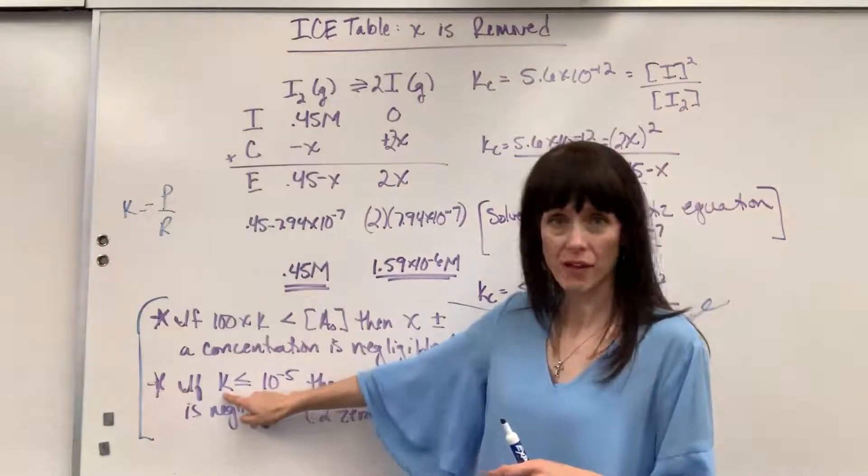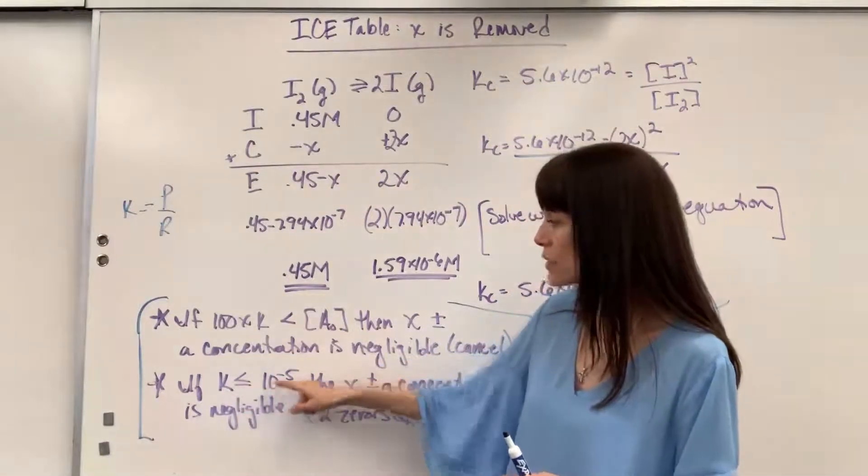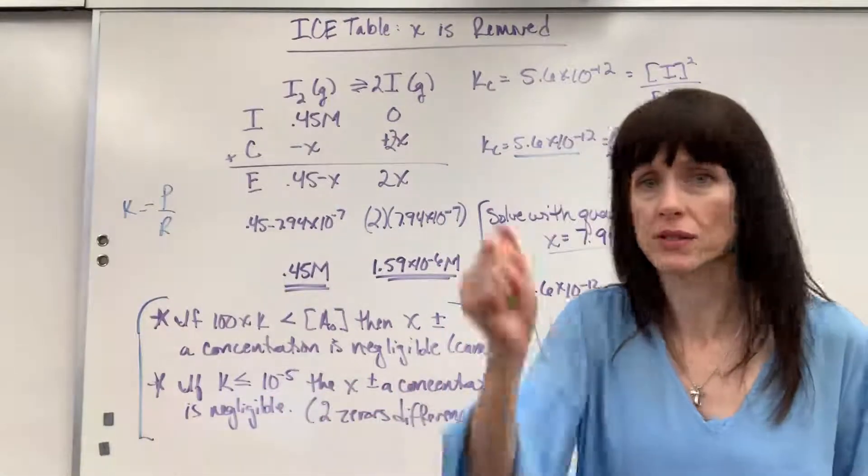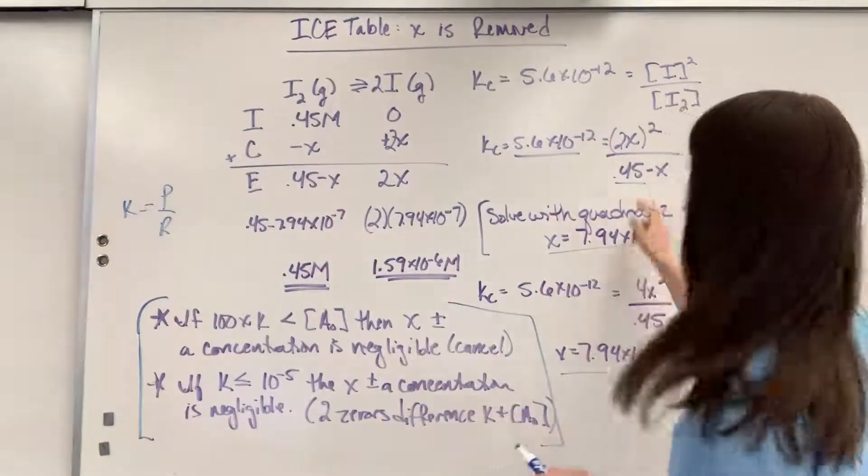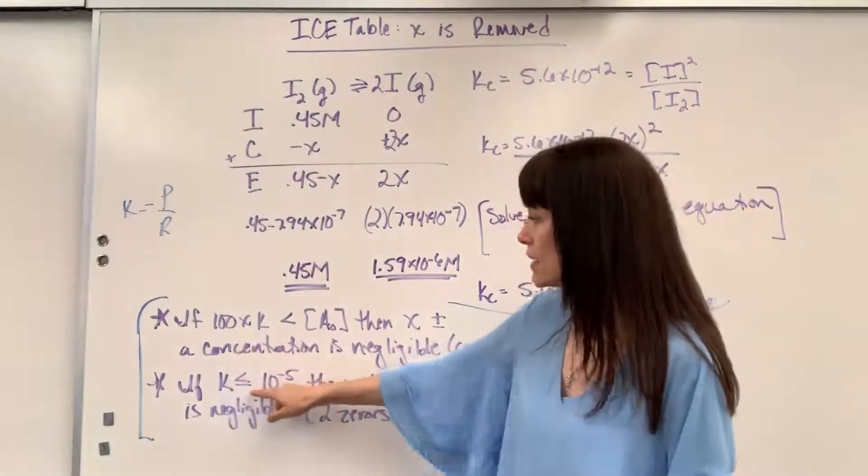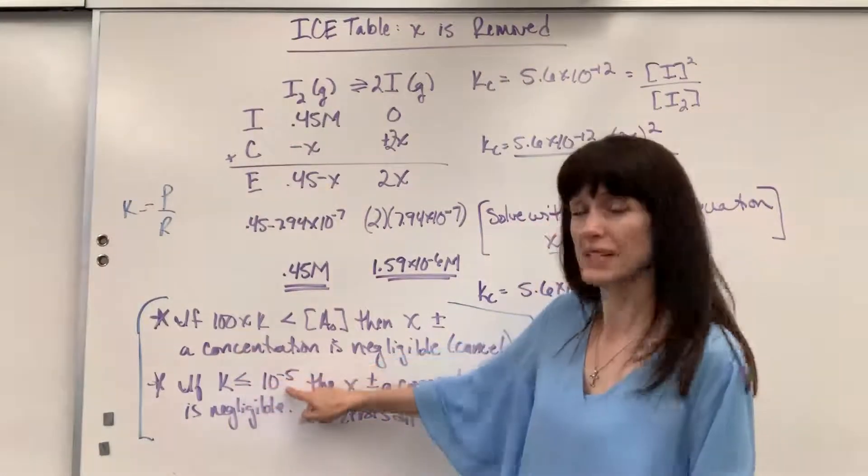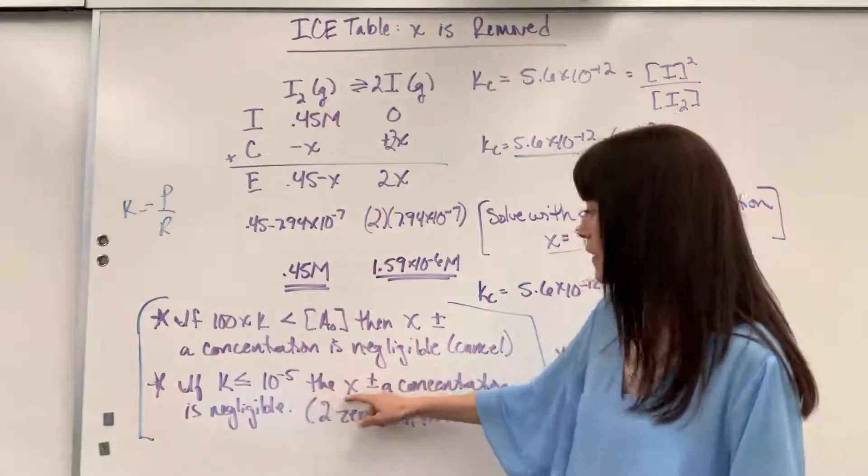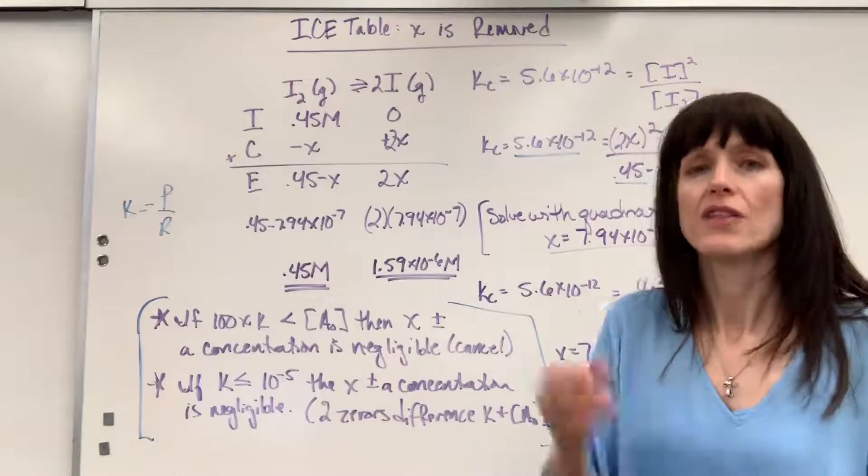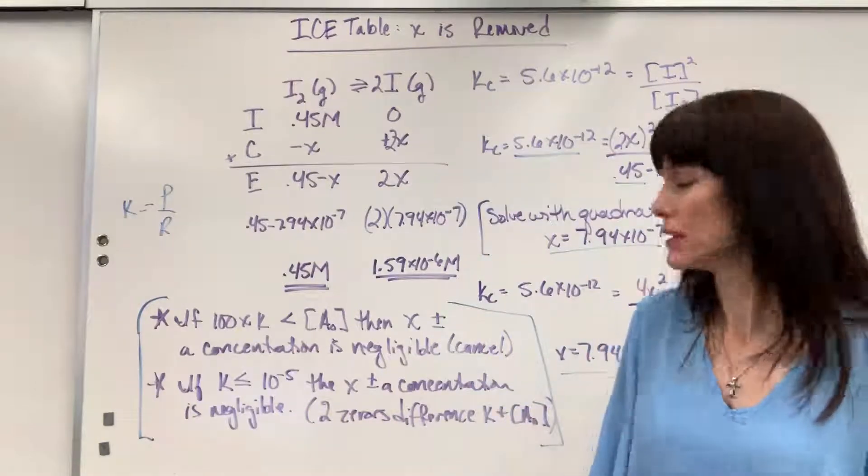So if you have a K value that's less than or equal to a magnitude of 10 to the minus 5, automatically I tell my students, x is going to be negligible when it's next to a concentration. So again, if K is less than or equal to 10 to the minus 5 magnitude, then the x is being added or subtracted to a concentration. That you cancel out is going to be negligible.